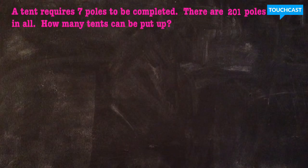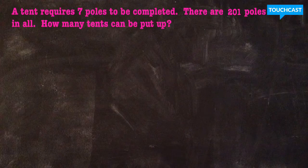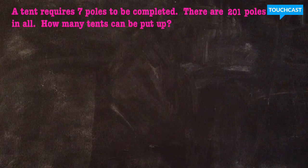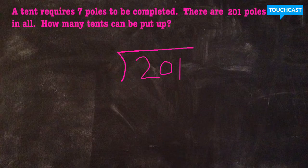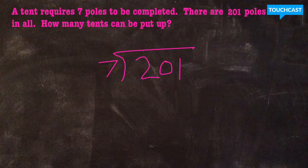Alright guys, let's check out the word problem above. So our word problem says that a tent requires seven poles to be completed or to be put up. There are 201 poles in all. How many tents can be put up?